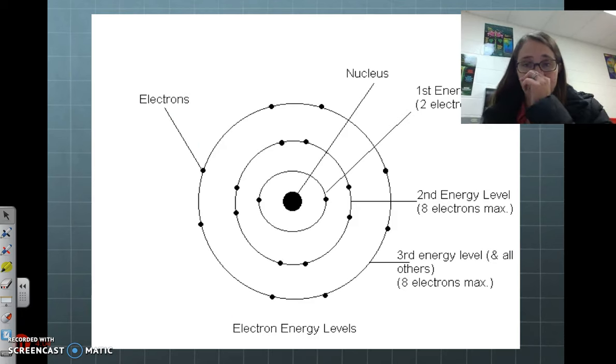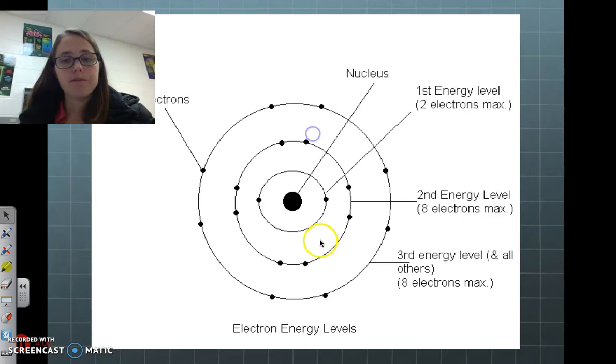So here is our diagram. We have our nucleus in here, our protons and neutrons. The first orbit has two electrons max. The second one has eight electrons max, and the third one also has eight.